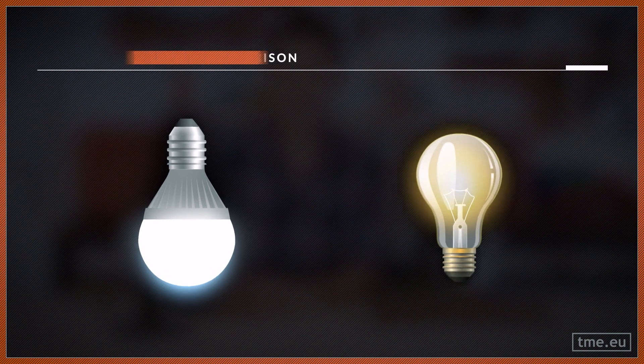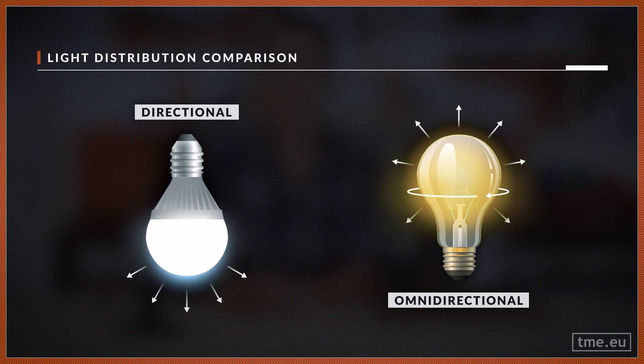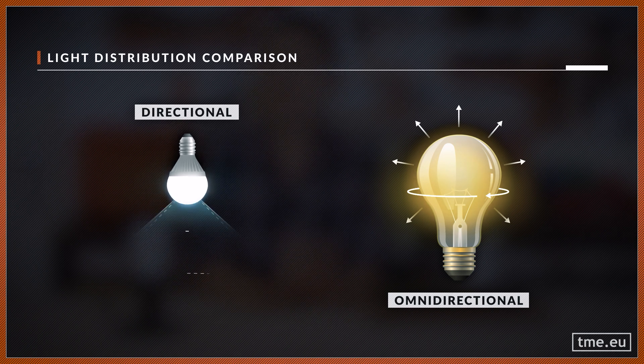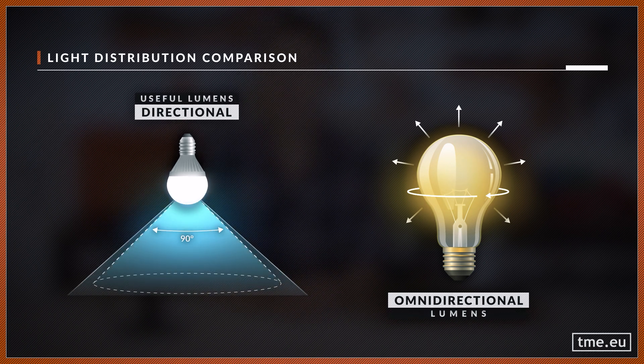More lumens, more light — right? Not always. If we compare two LEDs, non-directional and directional, with the same lumen specs, we can see the directional one looks brighter. The light from the non-directional LED is emitted in all directions and lights up areas that we don't necessarily need. That is why you should always check the useful lumen rating, which is the emitted light in a standardized 90-degree cone. It is lower than the total lumens the LED can emit, but it's more relevant.